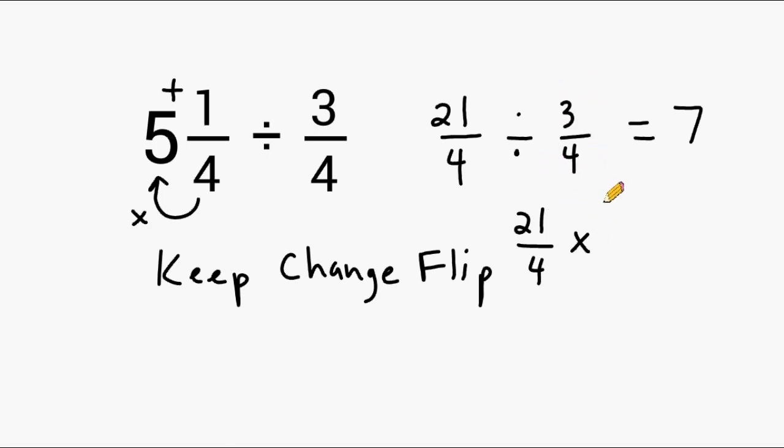By flipping they mean you reverse the numerator with the denominator. So we are going to switch the 3 and 4 so we have 4 thirds. We call this writing the reciprocal. Now we multiply straight across for the numerator which gives us a product of 84 and on the bottom we have 4 times 3 which is 12. And 84 divided by 12 is equal to 7.